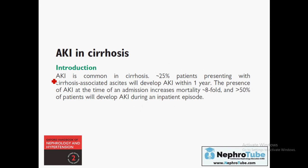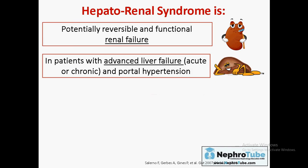Regarding acute kidney injury in cirrhosis, it is common — the incidence is about 25%. As with any acute kidney injury, patients with cirrhosis will have a risk of increased mortality and different comorbidities. This is a general rule in acute kidney injury whatever the cause.